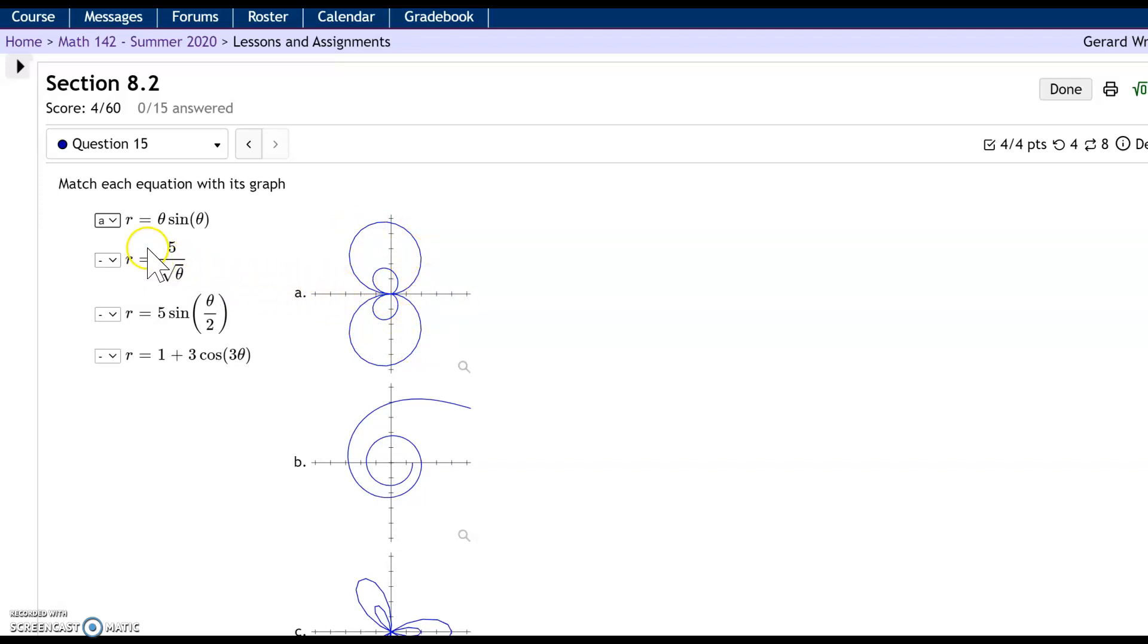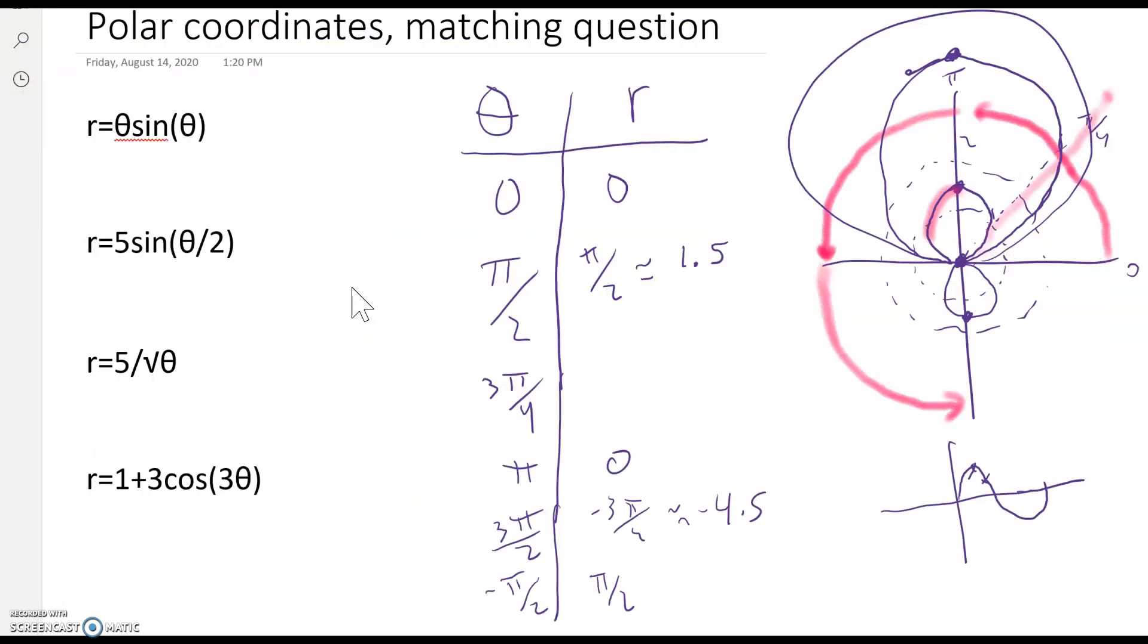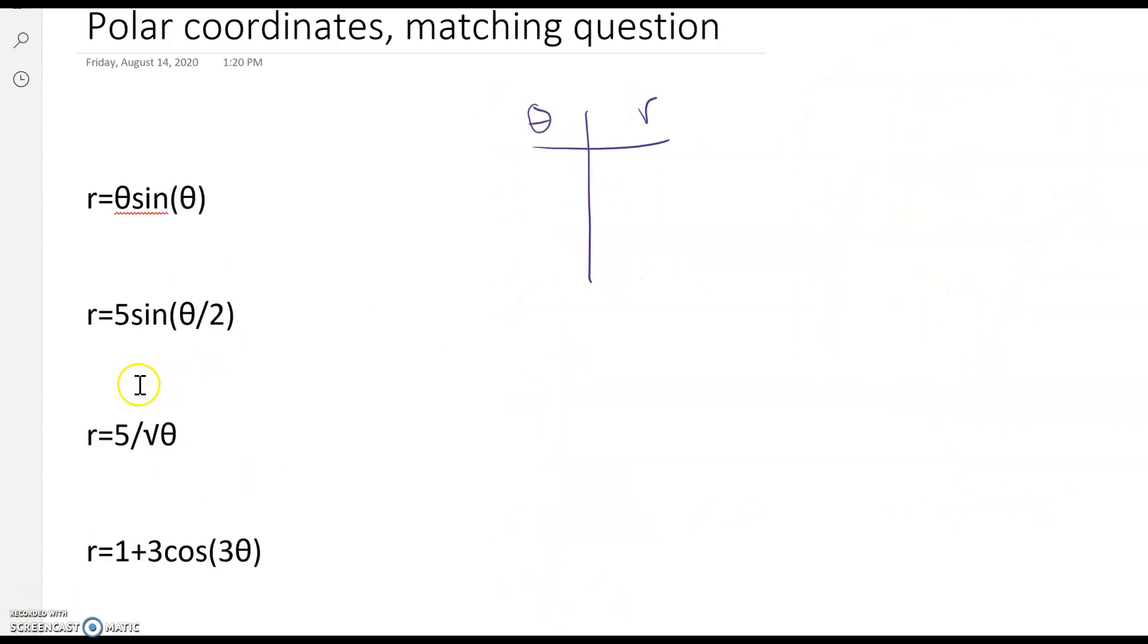Let's go on to the next one. 5 divided by square root theta. What does that look like? So 5 divided by square root theta is right there.